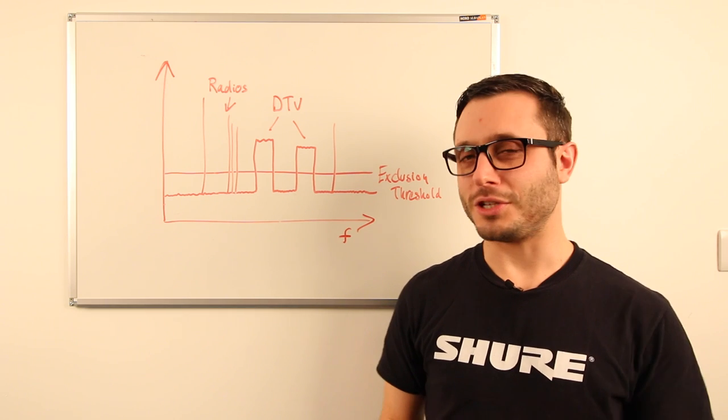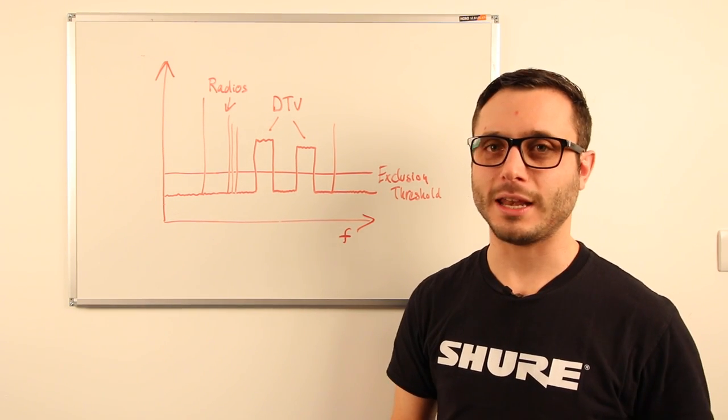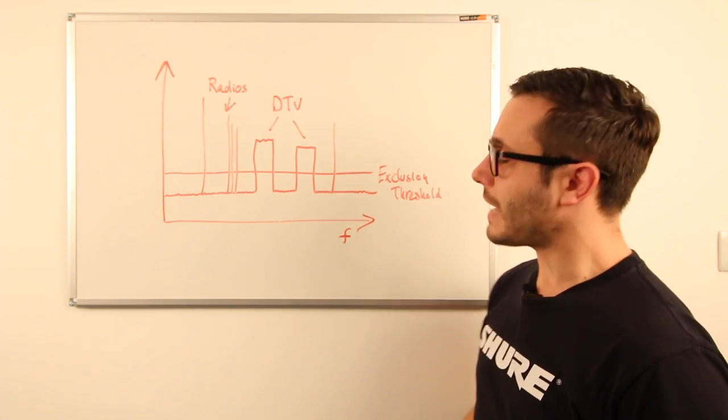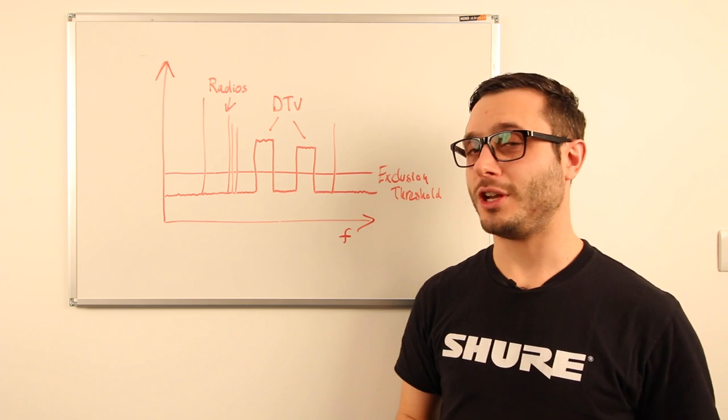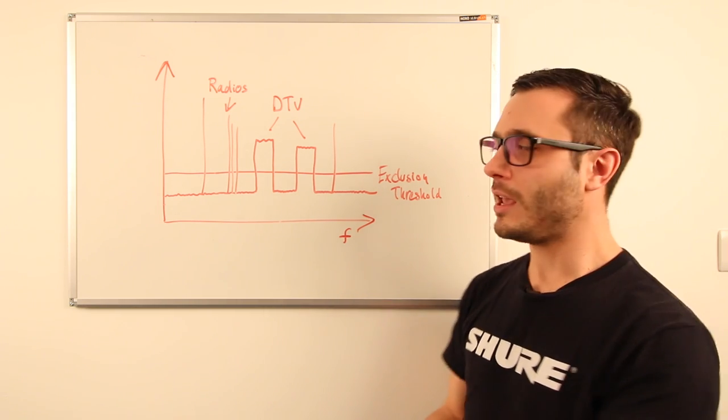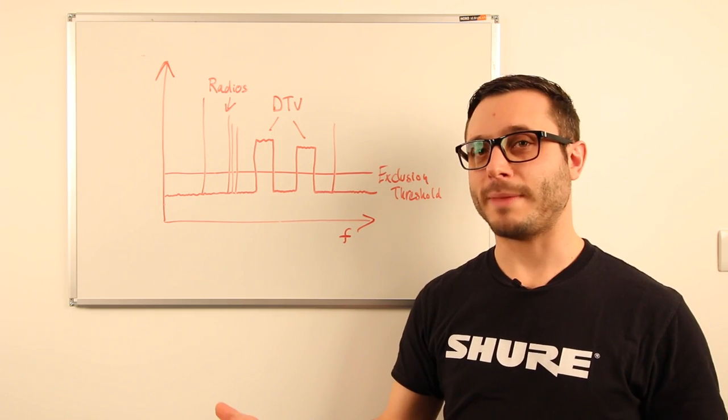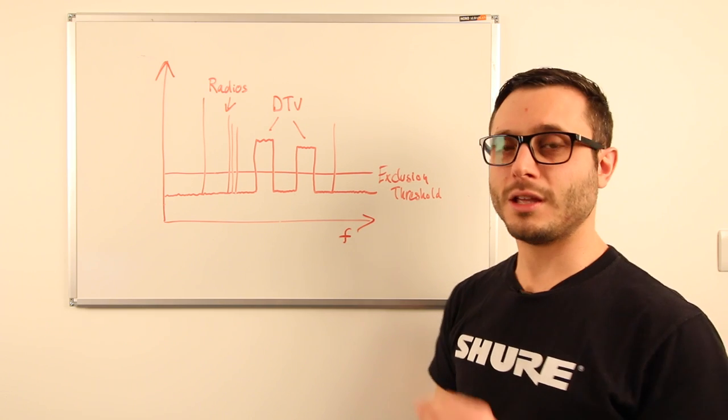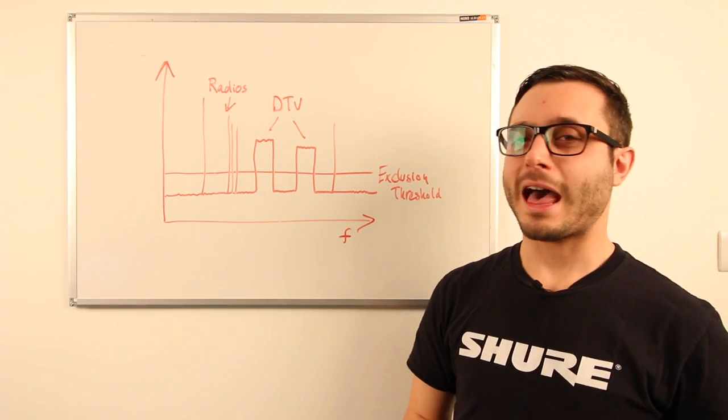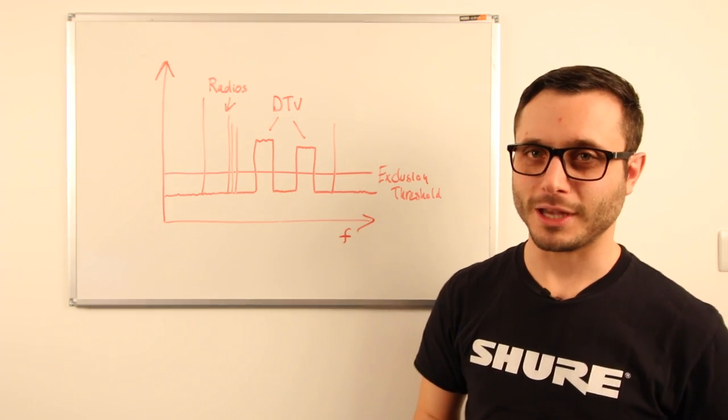Now the entry level systems usually have just a scan button. You press that once and it will find the next clean available frequency for you. The slightly more advanced systems have the ability to scan the entire tunable bandwidth, that is the radio spectrum that those guys can access in its full bandwidth. So they'll scan from say 606 megahertz up to 666 megahertz, looking at every single spot frequency along the way. Having done that, they'll be able to perform a test to see which is the best frequency for you to use.